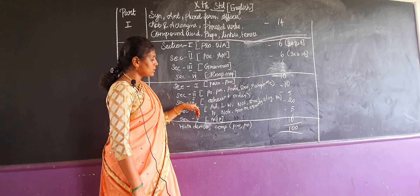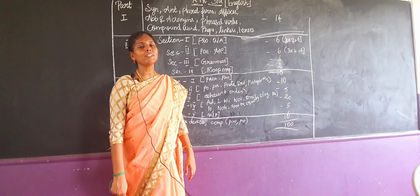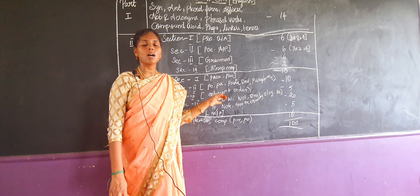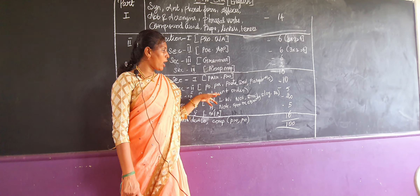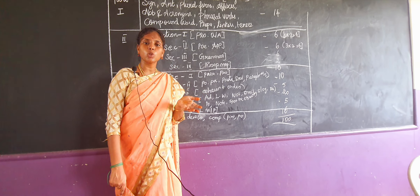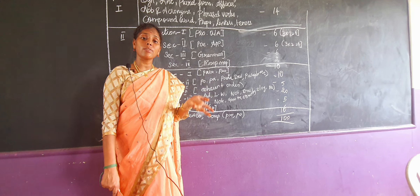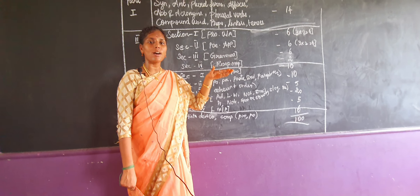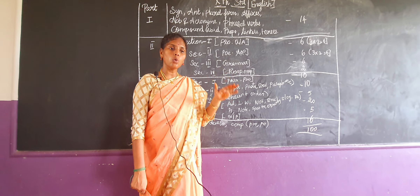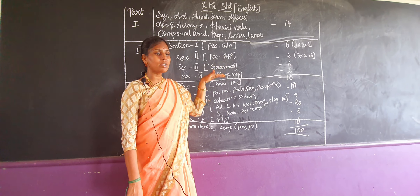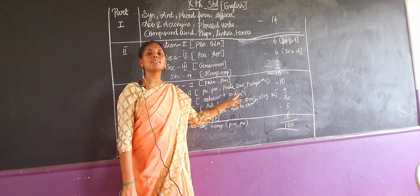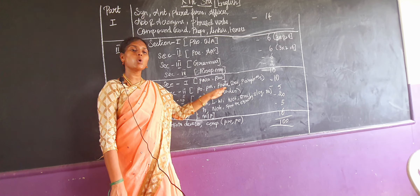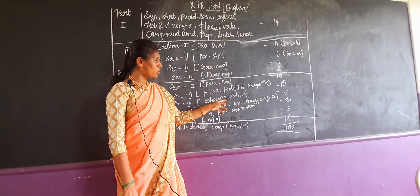Section 3 is coherent order — it comes under the supplementary part. They will ask you to arrange jumbled sentences in the correct order based on the supplementary story. Read and write in the correct order. If you know the supplementary story part well, you can easily score marks here.